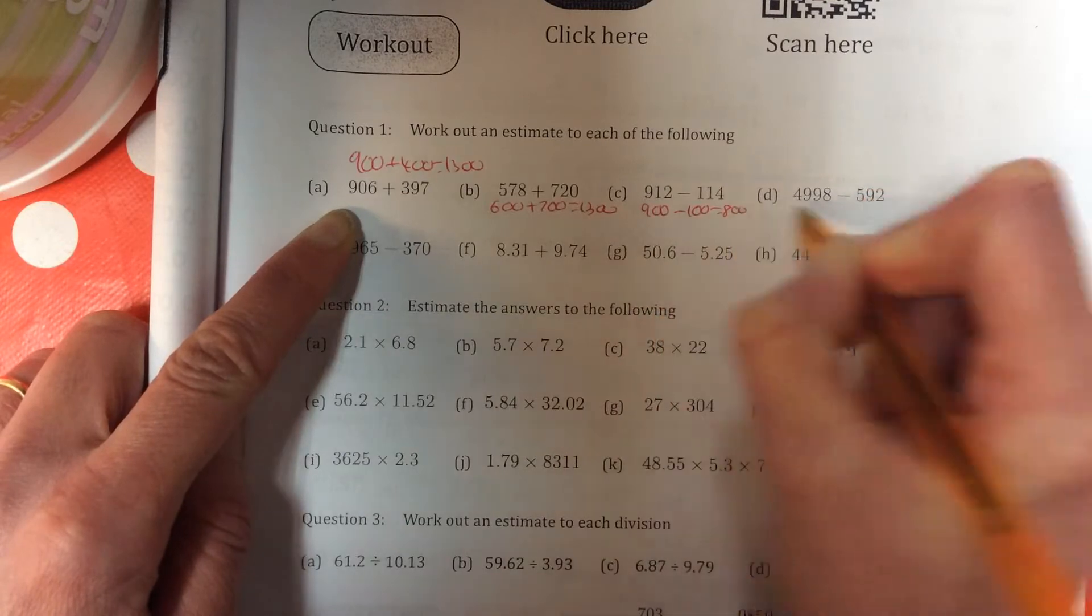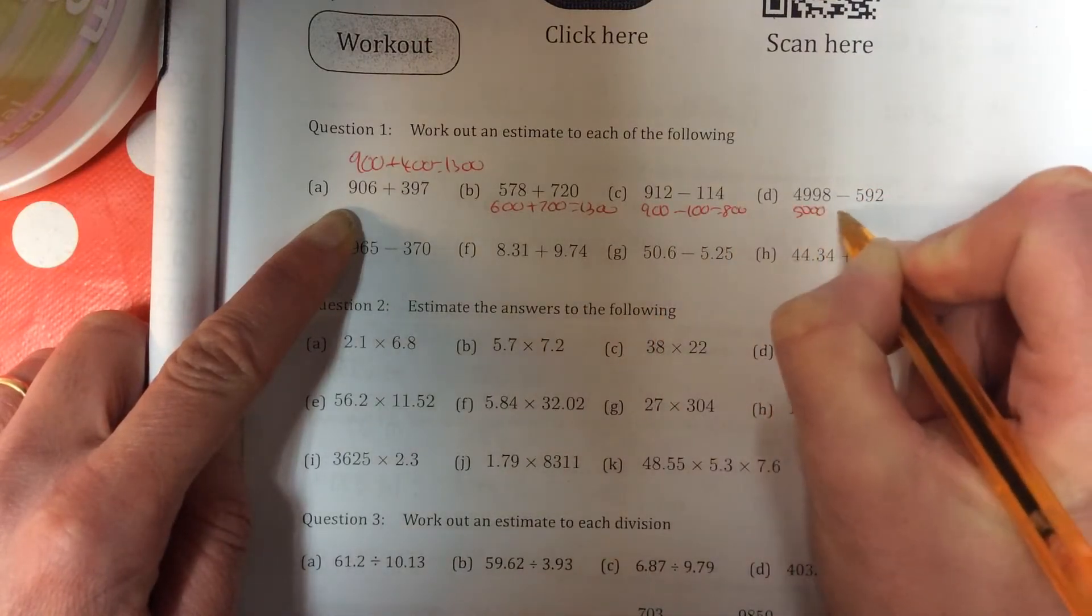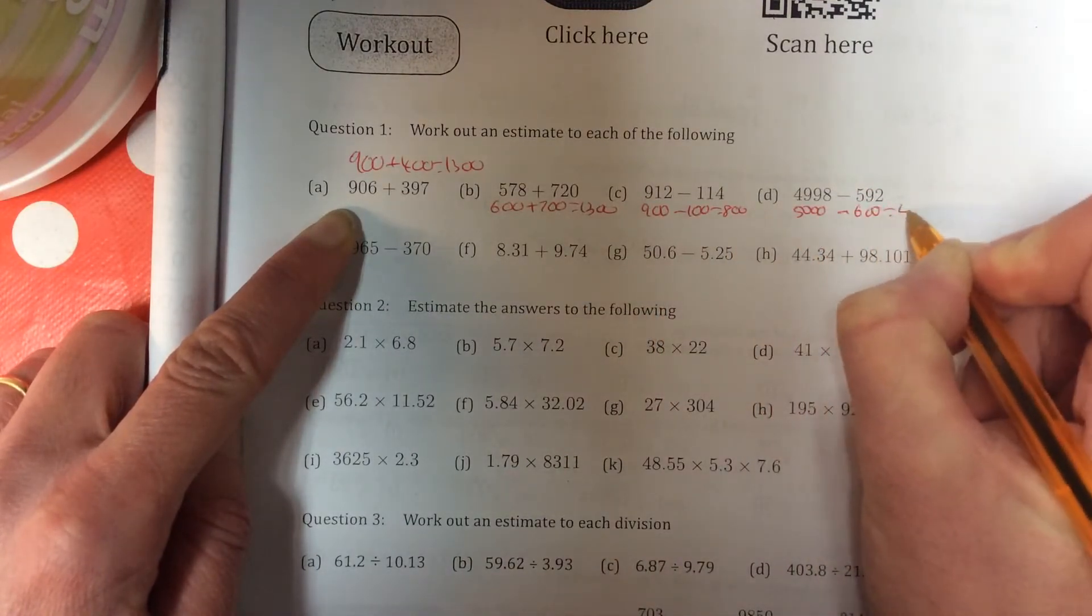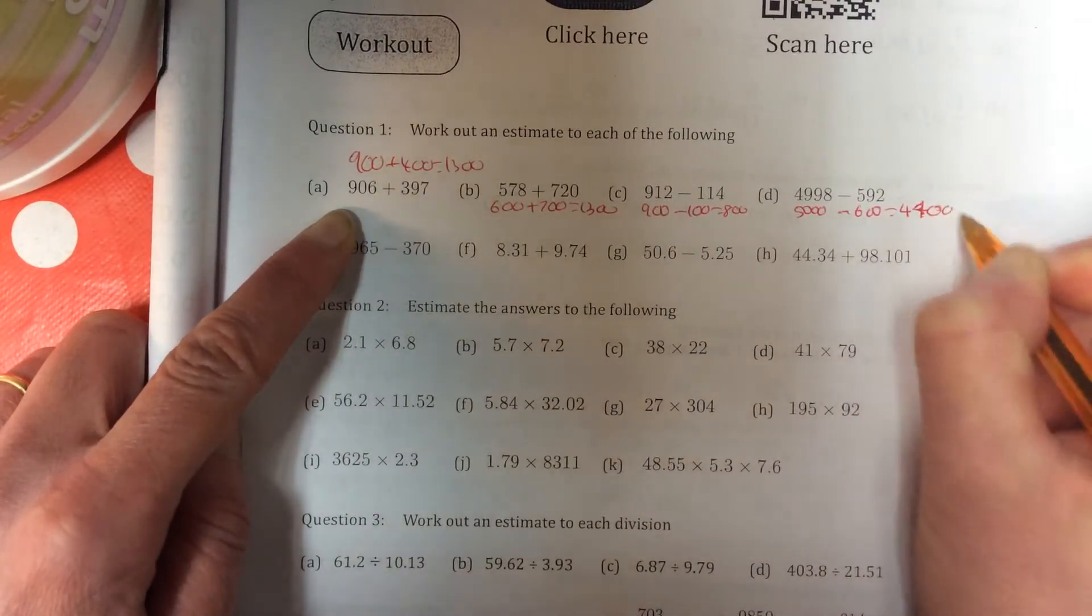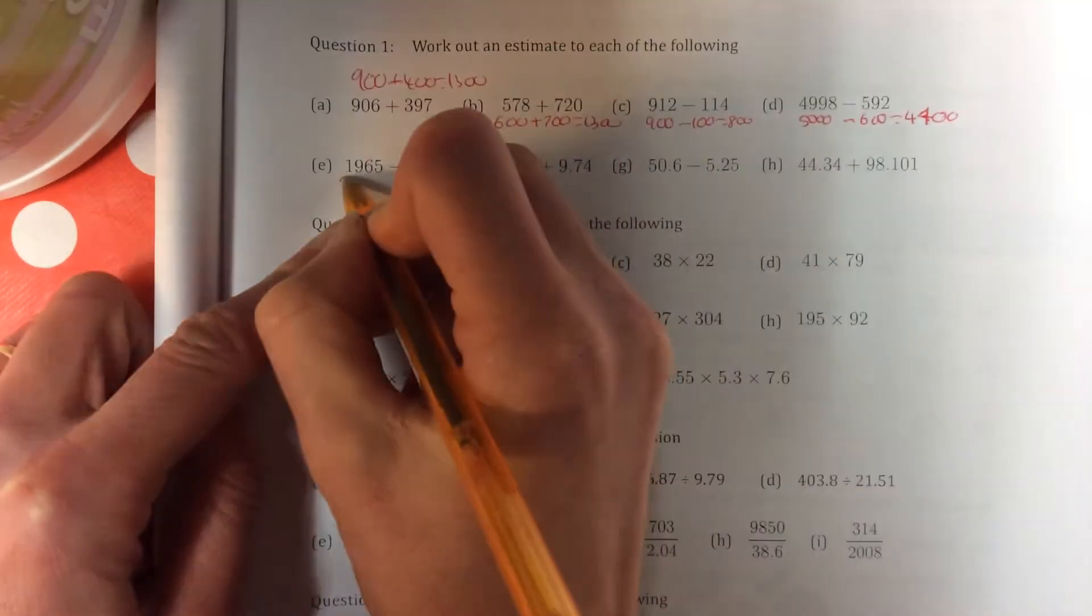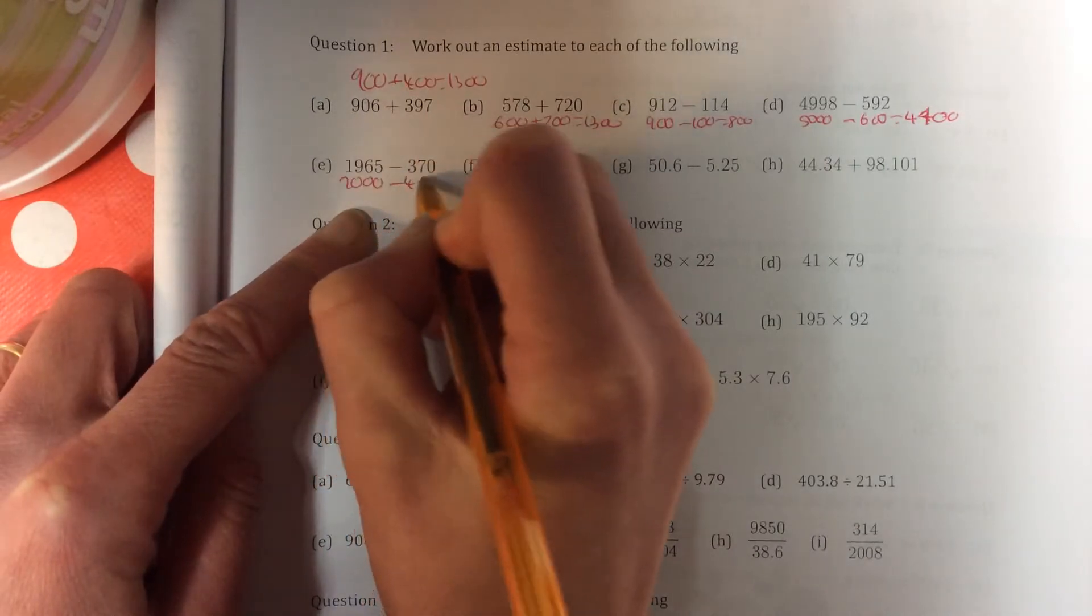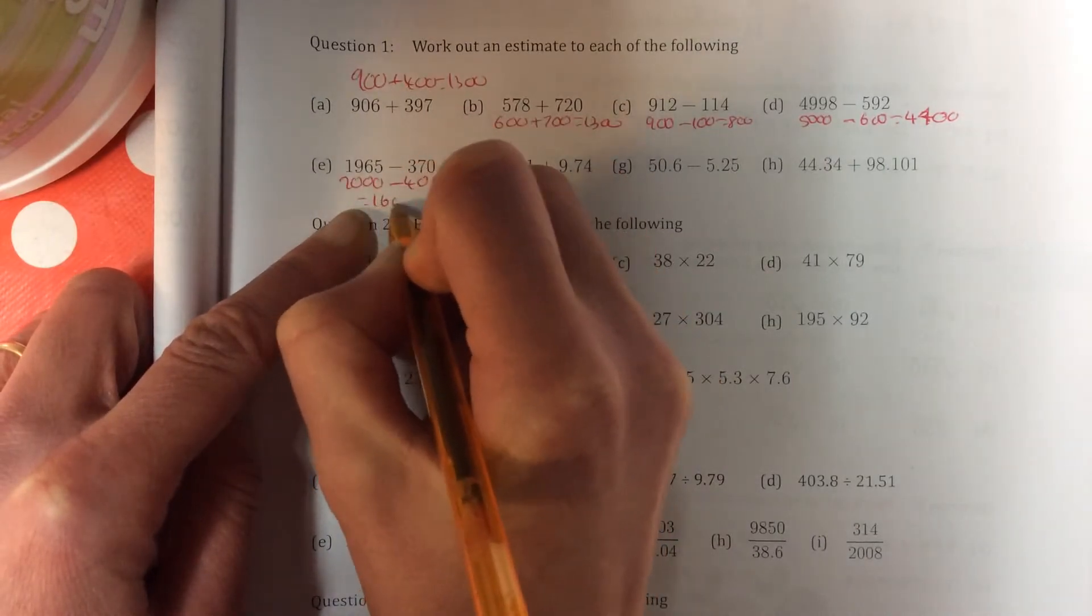900 minus 100 is 800. 5,000 minus 600 is 4,400. This one here, 2,000 minus 400 is 1,600.